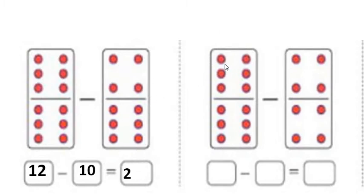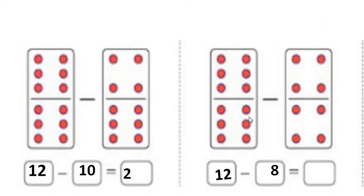Let's see some more examples. There are also 12 dots. Out of 12, I have to reduce 8 dots: 1, 2, 3, 4, 5, 6, 7, and 8. I stop there and count the remaining dots: 1, 2, 3, and 4. So 12 minus 8 equals 4.